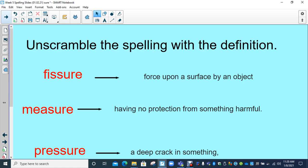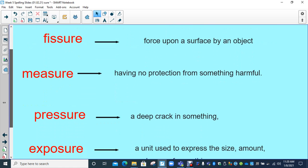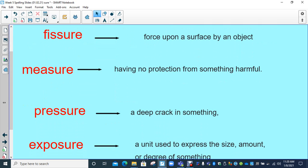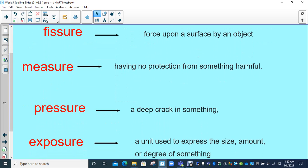Okay, and then we've got our last four. We've got fissure, measure, pressure, and exposure. Now, just to quickly remind you, fissure doesn't have anything to do with fish. It's a funny old word, isn't it? So fissure is a deep crack in something.